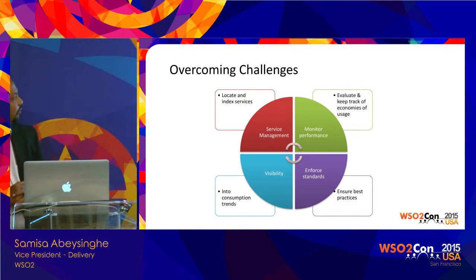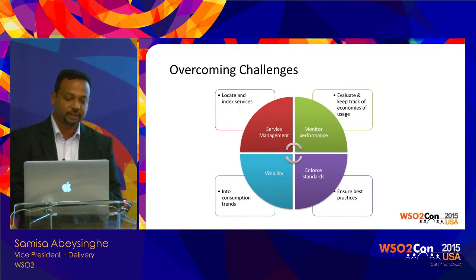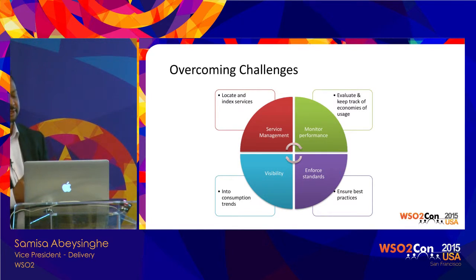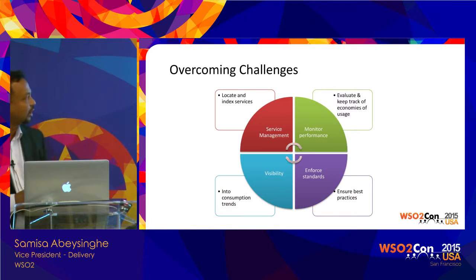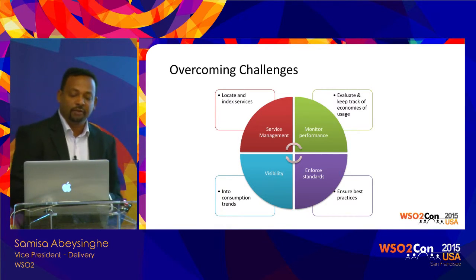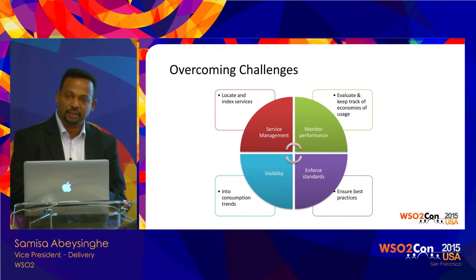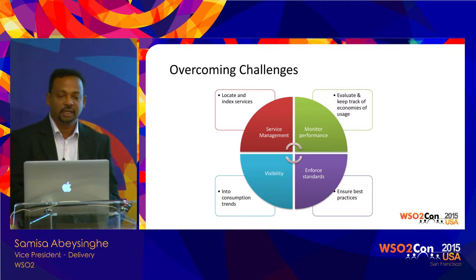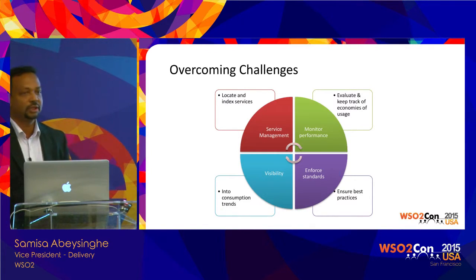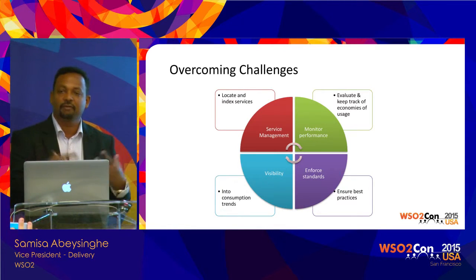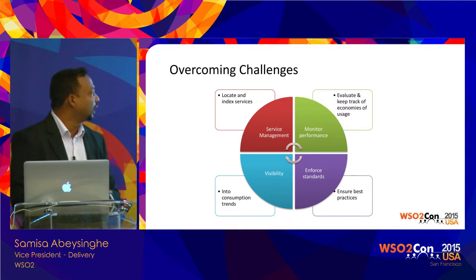How can we overcome those challenges? There are four main things you can do. First, if you have a services infrastructure, you need to bring in service management — that was the rationale behind SOA governance. You also need to monitor performance, enforce standards across the organization when people are developing and using APIs and services, and maintain visibility across the system. Service management is about knowing what services you have, where they are located, locating and indexing them, and being capable of searching for existing services.